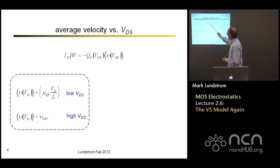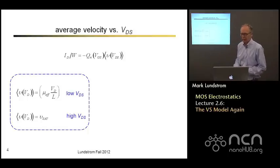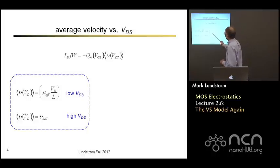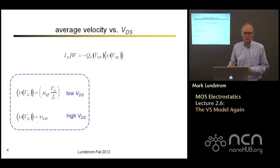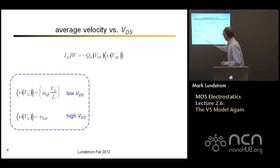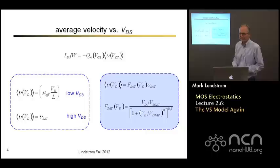So remember, current is charge times velocity. We have been spending a lot of time talking about charge so we understand that reasonably thoroughly now. The average velocity is mobility times electric field for low drain voltage. And in this velocity saturation model, the traditional MOSFET model that we're going to extend, the high field velocity, or the high drain voltage velocity, is just the saturated velocity of electrons. In the empirical virtual source model, we have an empirical function that takes us smoothly from the low drain voltage velocity to the high drain voltage velocity.